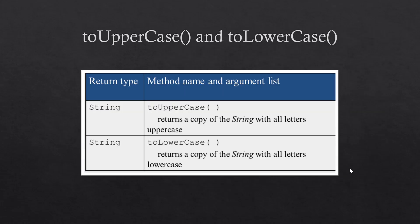You'll also see a description of the method telling you what it does — it returns the number of characters in the string object you called it on. The other two methods we reviewed were toUpperCase and toLowerCase. Both return a string: toUpperCase returns a copy of the string with all letters converted to uppercase, and toLowerCase does the opposite, returning a copy with all letters converted to lowercase.